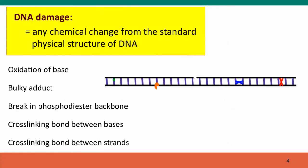So what is this DNA damage stuff? Really, we use the term DNA damage to refer to any chemical change from the standard physical structure of DNA. So damage includes such things as the oxidation of a base, shown here as a little green dot. The base has changed its chemical structure slightly because one of its bonds has become oxidized. And this can affect its ability, for instance, to form base pairs.